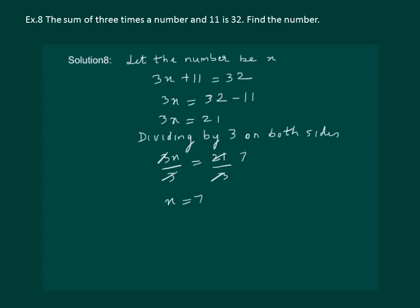Let us confirm it. Take the left hand side of the equation and substitute x equal to 7. We get 3x plus 11 at x equal to 7, which is equal to 3 into 7 plus 11, which is 21 plus 11, which is equal to 32, the right hand side of the equation. Hence, x equal to 7 is the required answer.